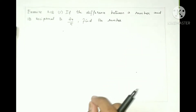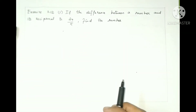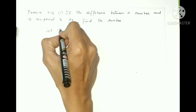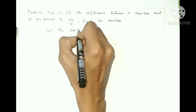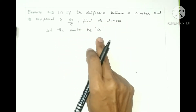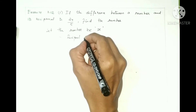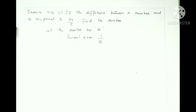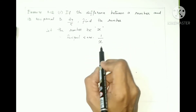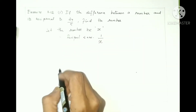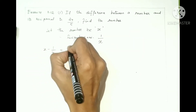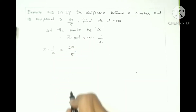So the difference between a number and its reciprocal will give us 24 by 5. Let the number be x. The reciprocal of x is 1 by x. So the difference between a number and its reciprocal: x minus 1 by x is equals to 24 by 5.